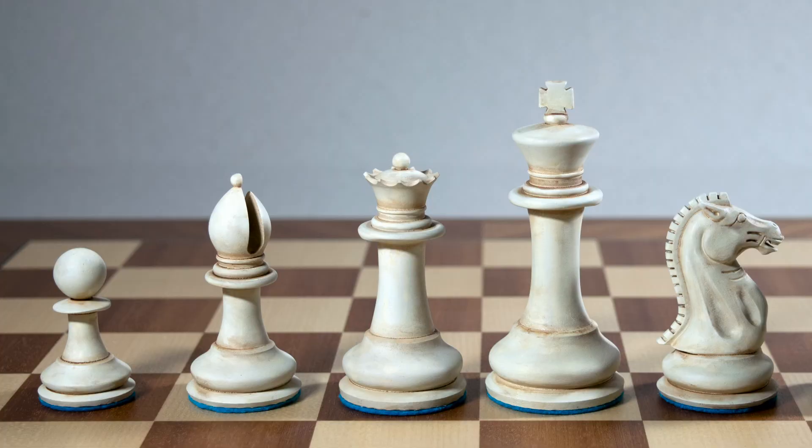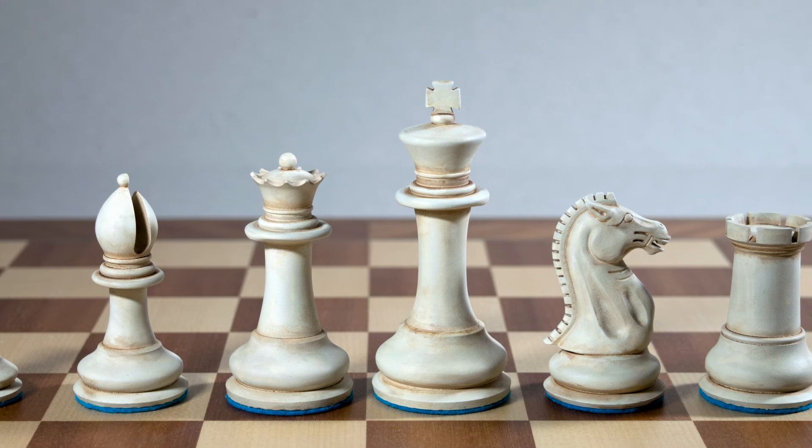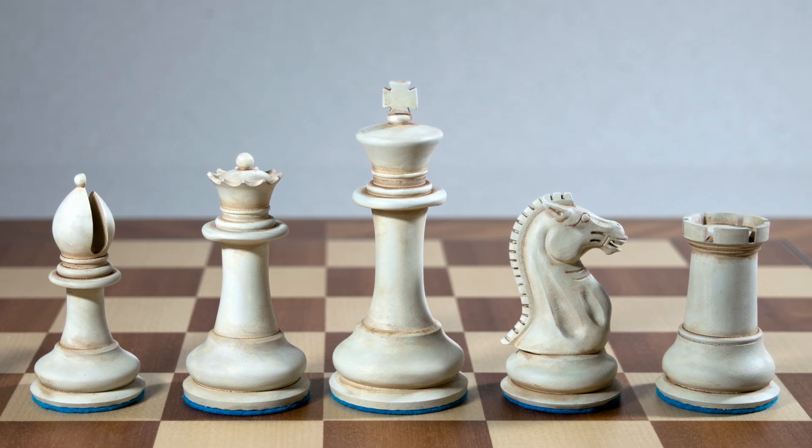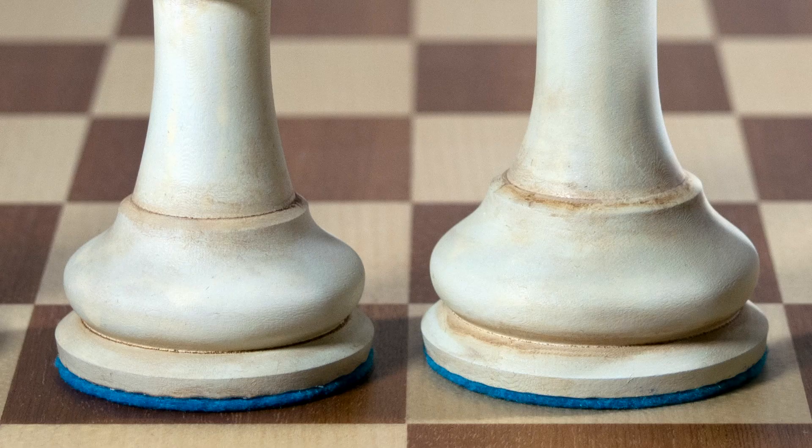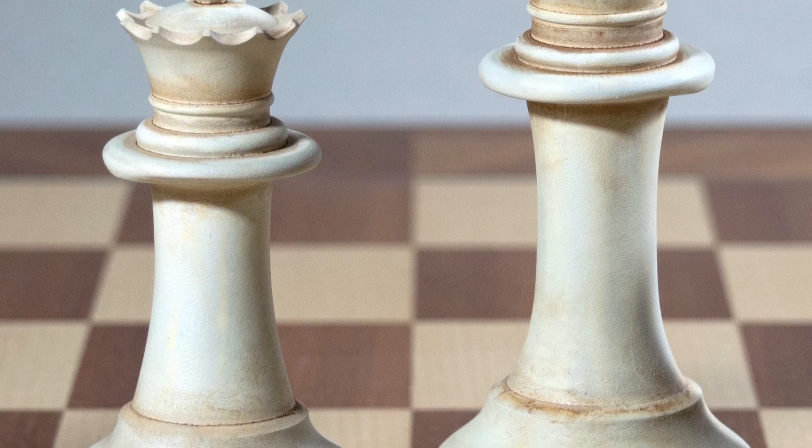And here's the whole set of Staunton pieces with this ivory treatment. See the texture of the 3D print actually helps to make the surface look rough and bone-like.